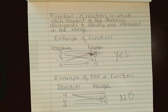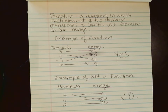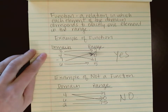Homework section 2.2, functions and graphs. Before I get into the actual homework, I'm going to talk about what a function is. A function is simply a relation in which each element of the domain corresponds to exactly one element in the range. So let's look at what an example of a function looks like and what an example of not a function looks like.